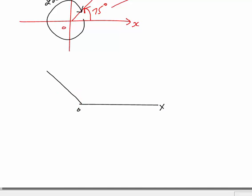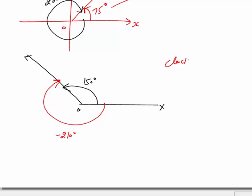Take another example: if an anticlockwise angle is 150°, then the clockwise angle would be 360 minus 150, which is 210°. Since it is clockwise, it is negative: minus 210 degrees. Very important — clockwise angle is always negative and anticlockwise angle is always positive.